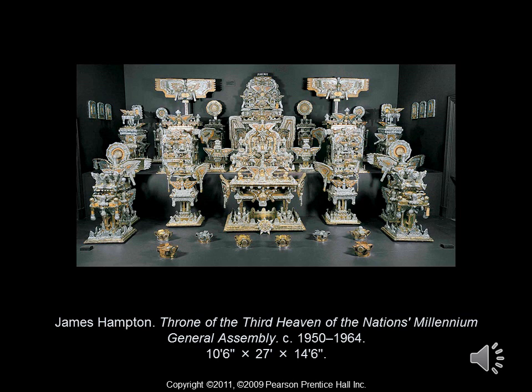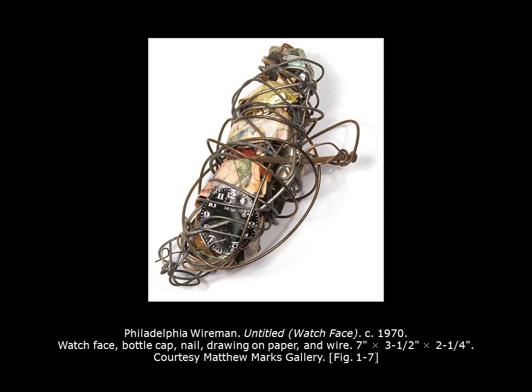This is from James Hampton — the Throne of the Third Heaven of the Nation's Millennium General Assembly. What's interesting about Mr. Hampton is that he did not have any artistic training. Over 14 years between 1950 and 1964, he took various items from work — he was a janitor — and slowly started assembling this project, covering items in gold leaf and in silver leaf. He believed that Jesus was coming soon and needed a place to sit. This work now exists in the Smithsonian Institution.